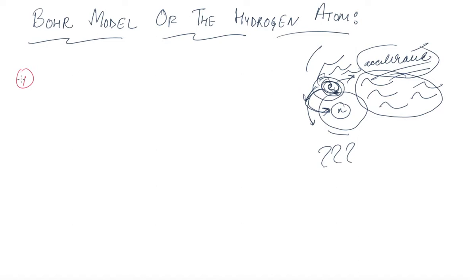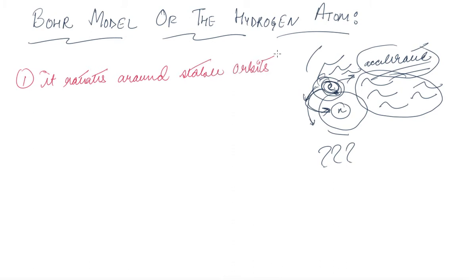The first postulate of Bohr's model states that an electron in an atom can revolve in certain stable orbits without the emission of radiant energy. So the electrons rotate around stable orbits without the release of energy.